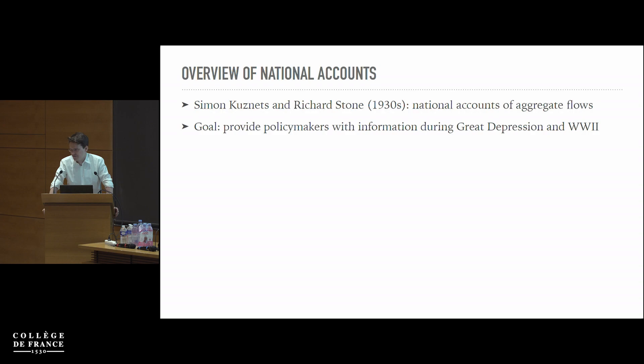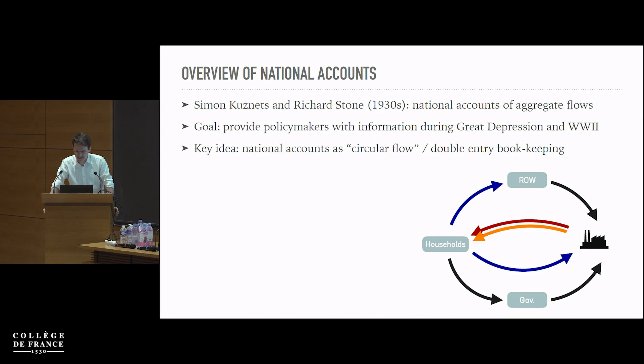In the 1930s, Simon Kuznets in the US and Richard Stone in the UK developed a first comprehensive version of the national accounts that had all the aggregate flows in it — aggregate consumption, income, production, etc. One goal was to provide policymakers with much-needed information on the state of the economy during the Great Depression and during World War II.